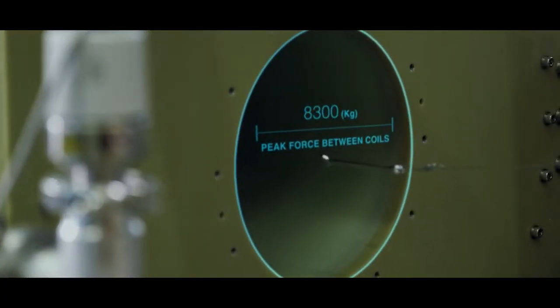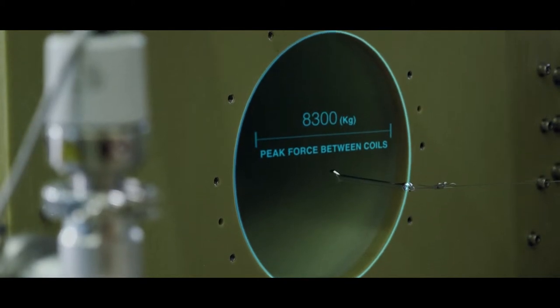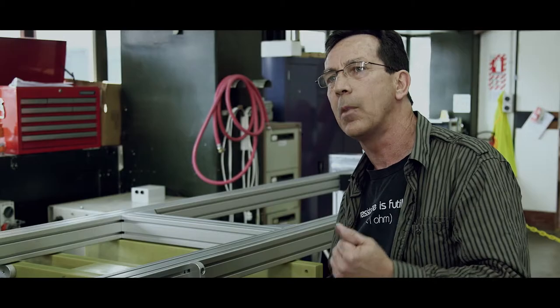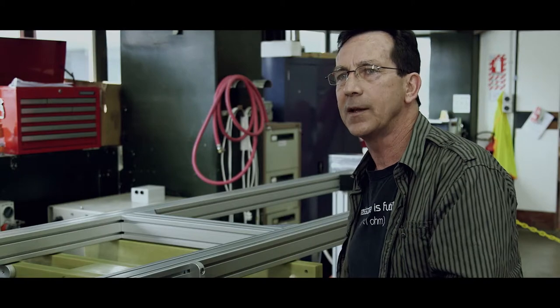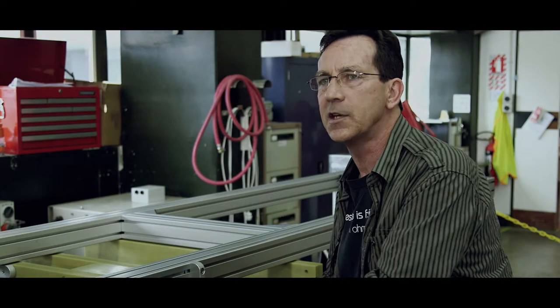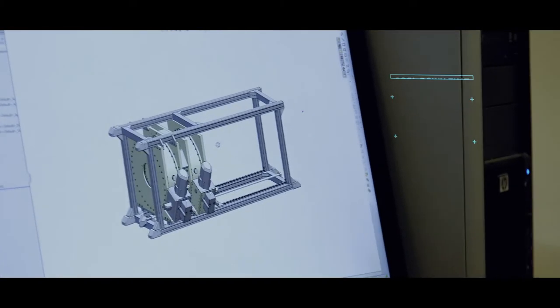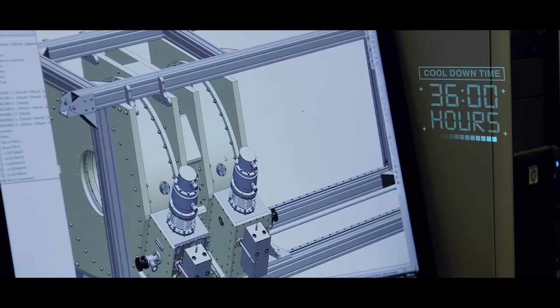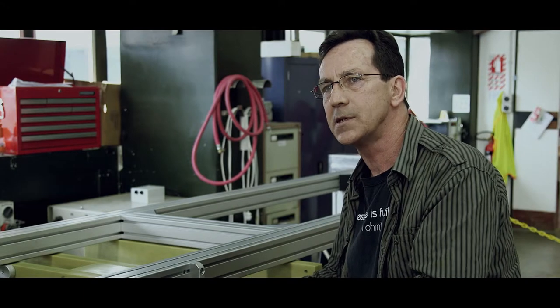In order for the superconducting material to function as designed, it has to be chilled down to minus 250 degrees Celsius. The way we achieve this is by evacuating the cryostat, the container. It's got a high level vacuum inside and the coils sit five millimeters approximately away from the inside wall.